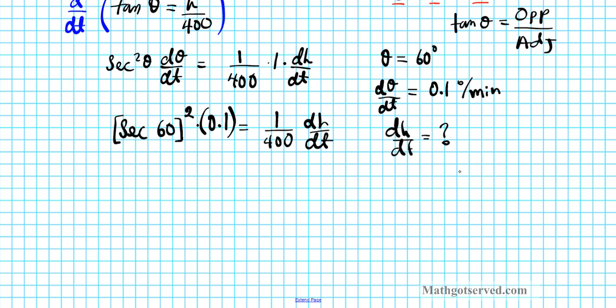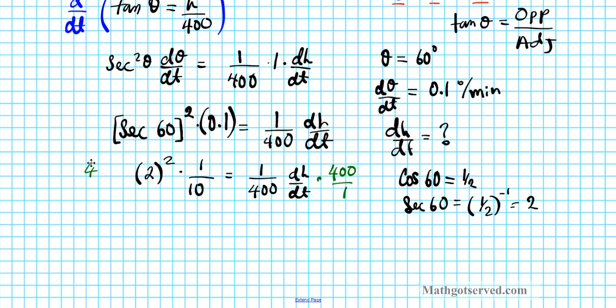Secant 60 degrees. Remember cosine 60 is 1 half. So secant 60 is going to be the reciprocal of that which is 1 half to the negative 1 which is 2. Okay? So we have this is 2. 2 squared times 0.1 as a fraction is 1 over 10 equals 1 over 400 dh/dt. So let's go ahead and isolate dh/dt. Okay? So just multiply both sides by 400 over 1.